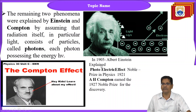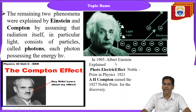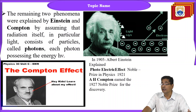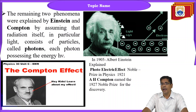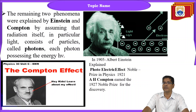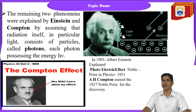Albert Einstein explained the photoelectric effect in 1905, for which he got the Nobel Prize in the year 1921. Similarly, scientist A.H. Compton earned the Nobel Prize in the year 1927 for the discovery of the Compton effect.